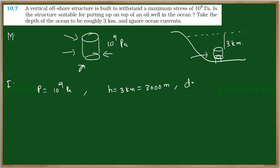And we know the density of the water that is 1 gram per cc, which can be written as 1000 kg per meter cube. And acceleration due to gravity g is equal to 9.8 meter per second square.